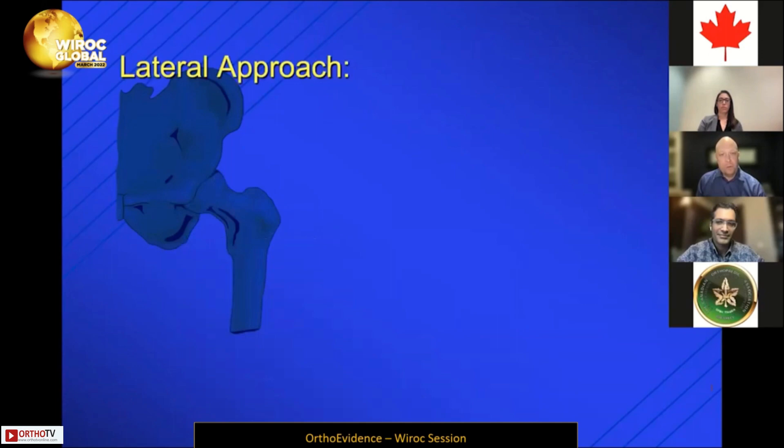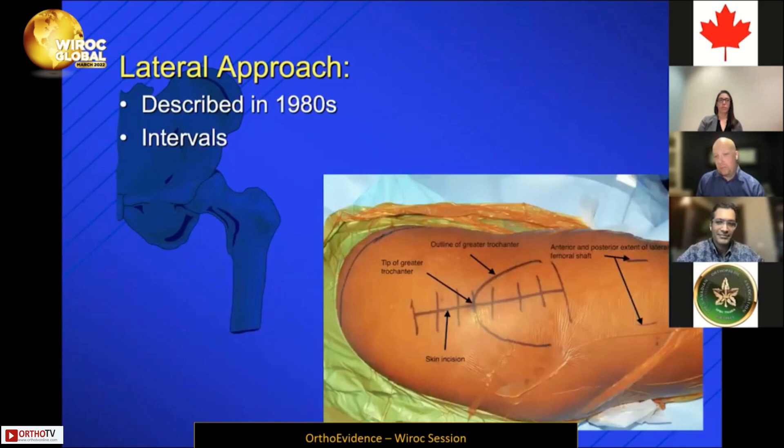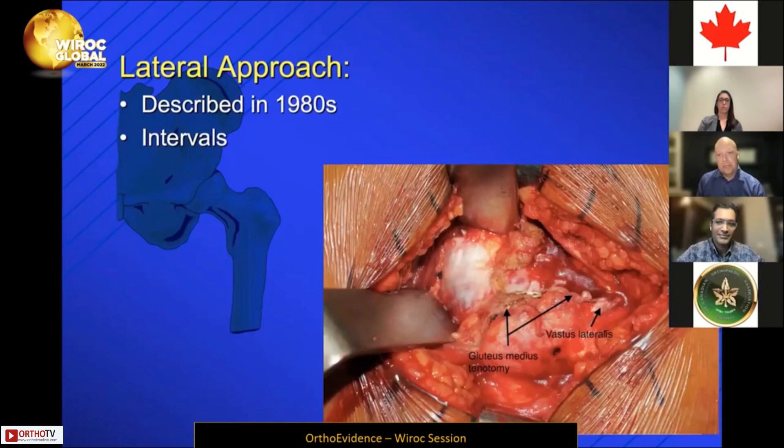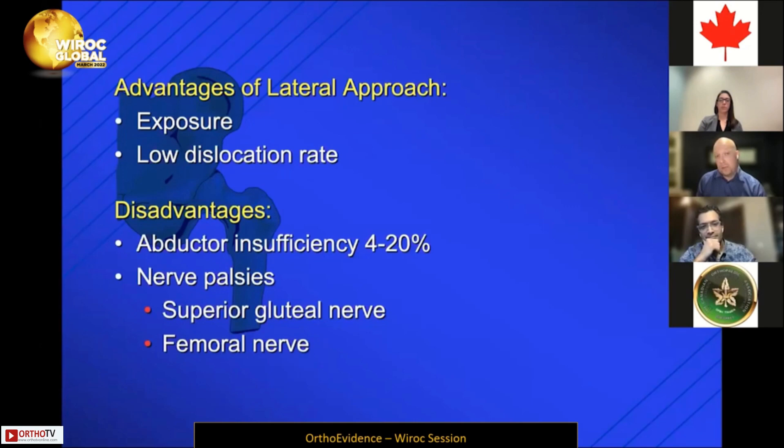For the lateral approach, this originally came out of Europe in the 1980s. Your incision is generally more centered over the trochanter with no curve posteriorly — more in line with the femur. You're going to split through the tensor fascia latae and then some varying degree of split of the abductors, be that a 50/50 split or an anterior one-third / posterior two-thirds split, depending on surgeon preference.